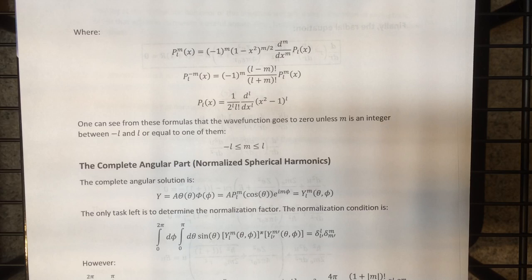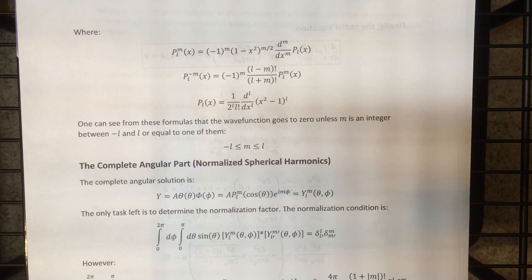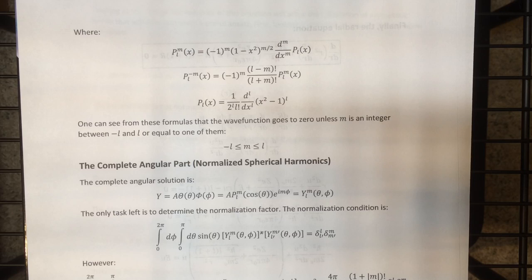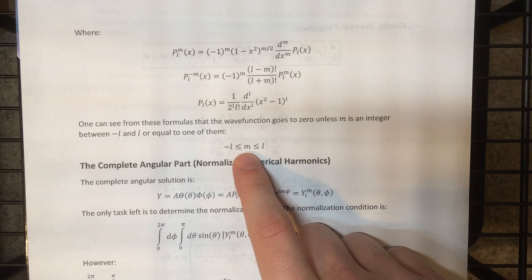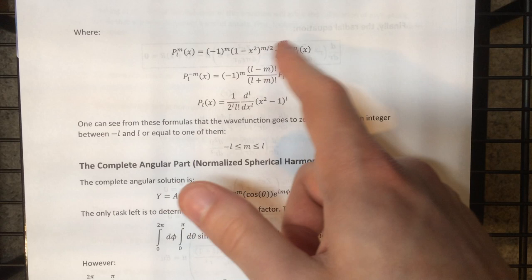And l controls the order of the unassociated Legendre polynomial you're differentiating. If you pick m to be too large, you'll differentiate the finite-order unassociated Legendre polynomial so many times that it'll give zero. Since the wave function is proportional to this theta factor, it will zero the whole wave function and give an invalid state. So m must be selected to satisfy a specific restriction based on the value of l. If you don't pick m such that its absolute value is less than or equal to l, you'll get zero.